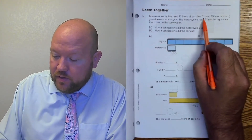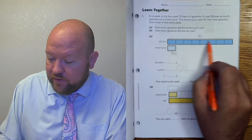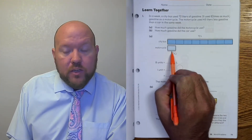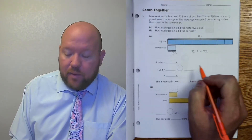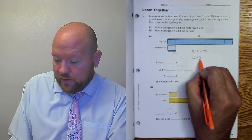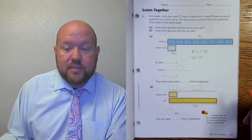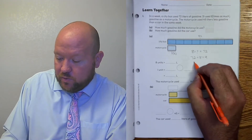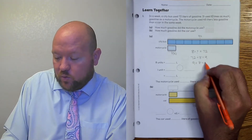So here we have 72 liters, and it used eight times as much. So we need to figure out how much one of these little boxes is equal to. Eight times something equals 72, so how do I figure that the opposite way? I'm going to do 72 divided by eight. And 72 divided by eight is nine. That's true because nine times eight equals 72. So we know eight units equals 72 liters, one unit equals 72 divided by eight, which is nine.